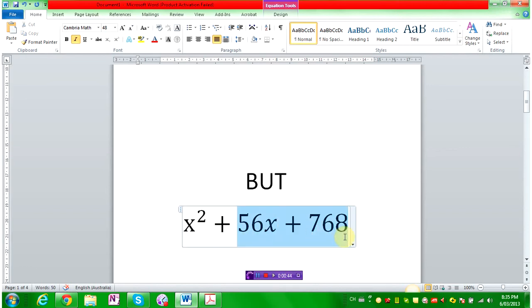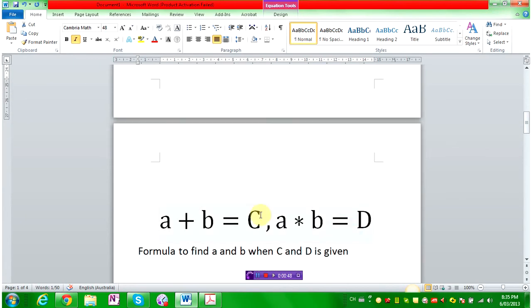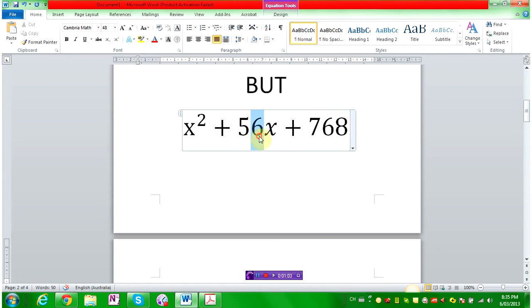When you get these big numbers, it's going to be way harder. And I'm going to show you a formula which does this. I'm going to show you a formula to find a and b when C and D is given. Just have a look at it first. a plus b equals to C. a times b equals to D. And we know C.